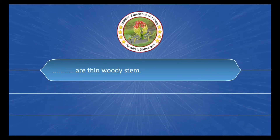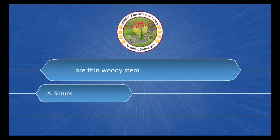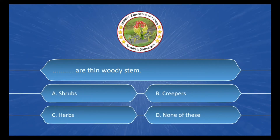___ have a thin woody stem. The options are: A. Shrubs, B. Creepers, C. Herbs, D. None of these. The correct answer is Option A: Shrubs.